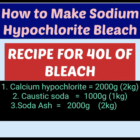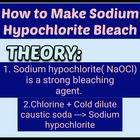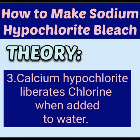From our theory, we have learned that sodium hypochlorite, which has the formula NaOCl, is a strong bleaching agent. We've also learned that when chlorine reacts with cold dilute sodium hydroxide, which is also called caustic soda, it produces bleach, which is sodium hypochlorite. We've also learned that calcium hypochlorite is a source of chlorine when it is added to water — meaning when calcium hypochlorite reacts with water, it liberates chlorine.